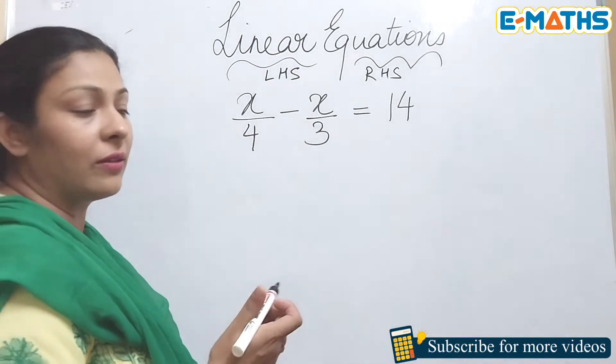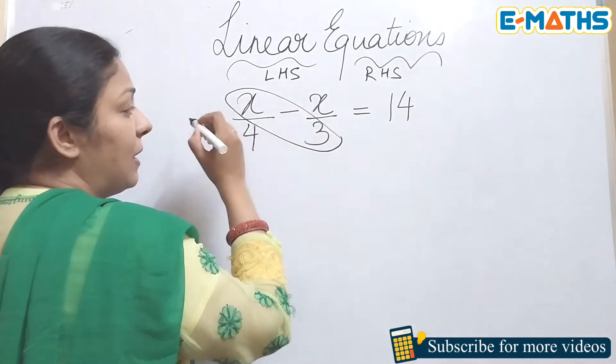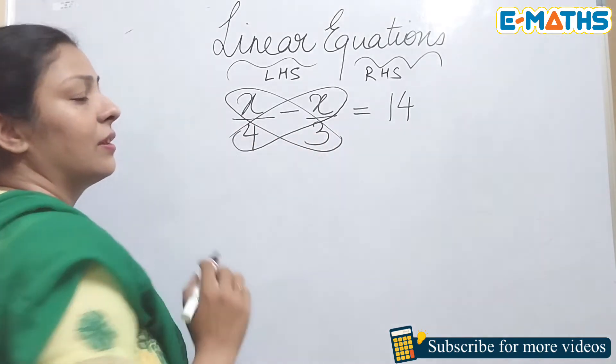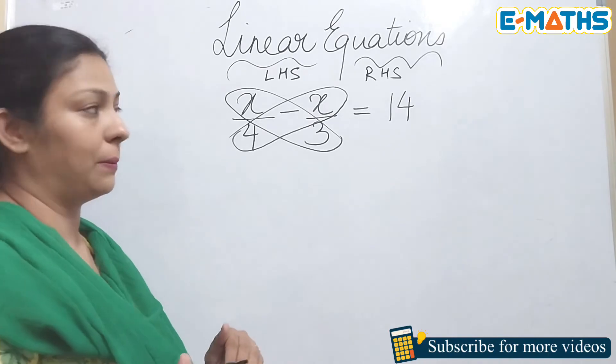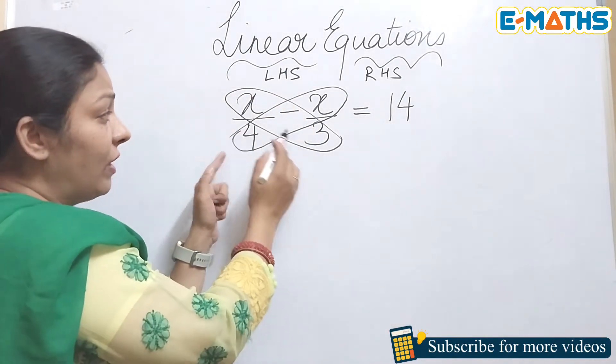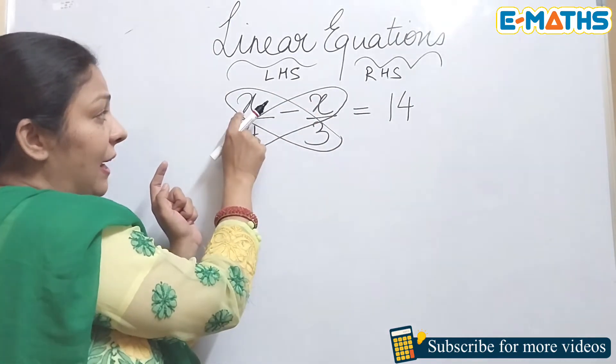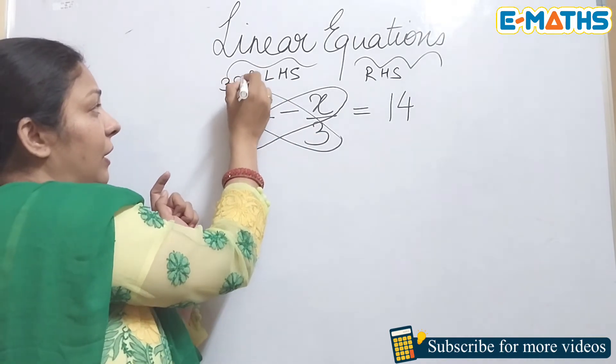As I said butterfly method, I'm going to draw a butterfly for you, which means the butterfly method in which we are going to cross multiply. We'll keep the numerators at their own places, only will cross multiply by the denominator of the other term. This shows that this x is going to be multiplied by this 3, and this will give you 3x.